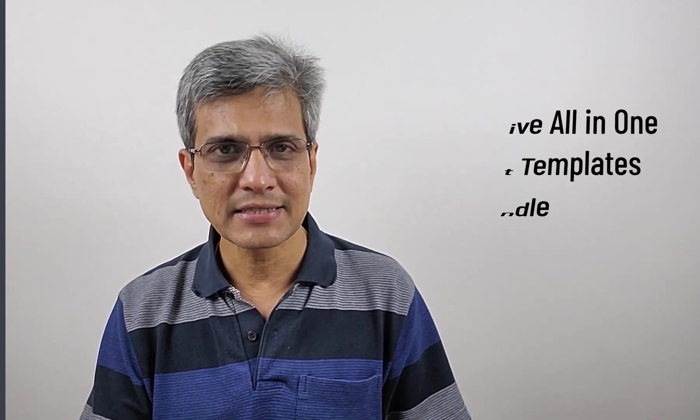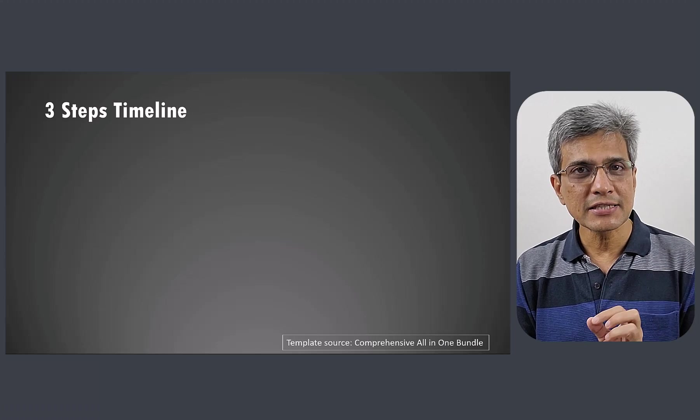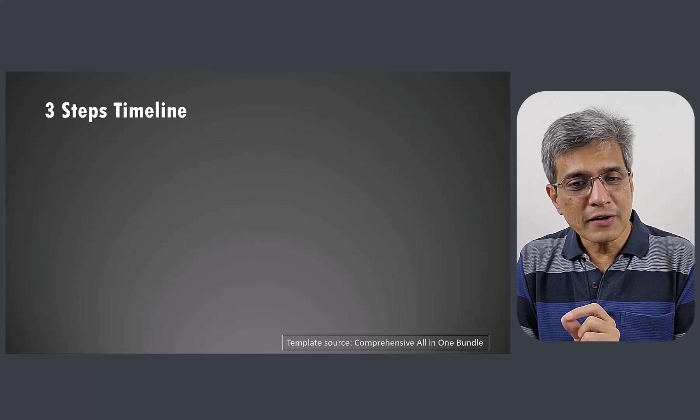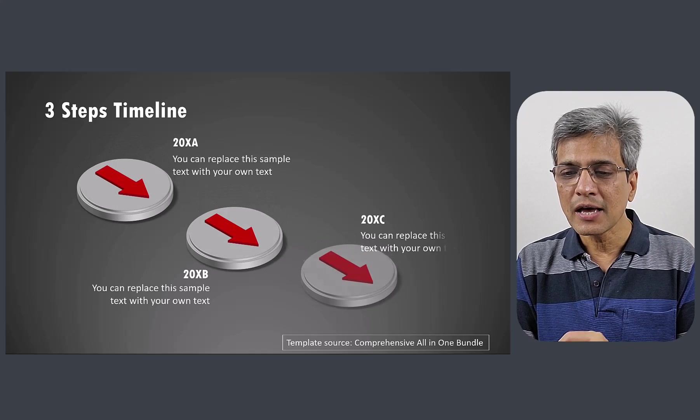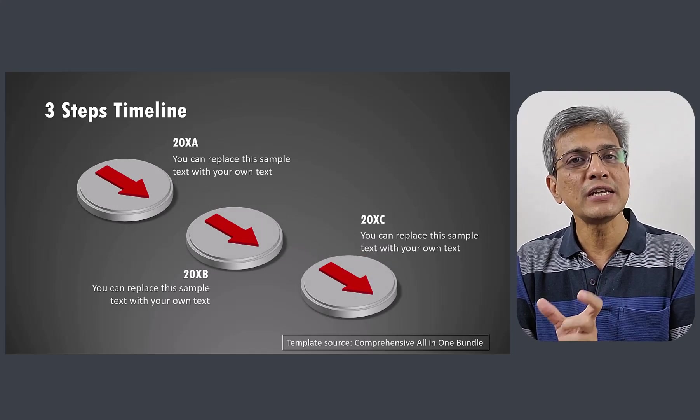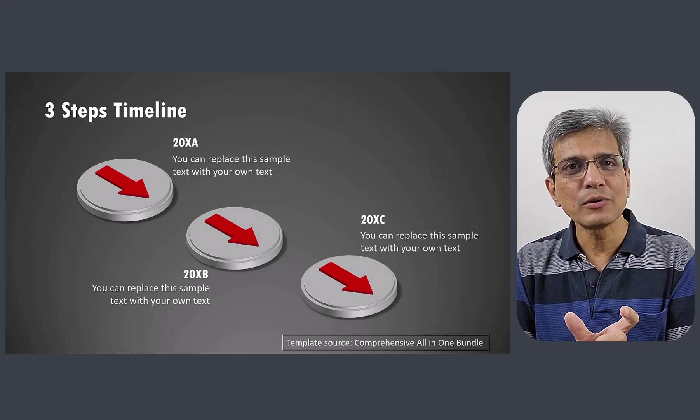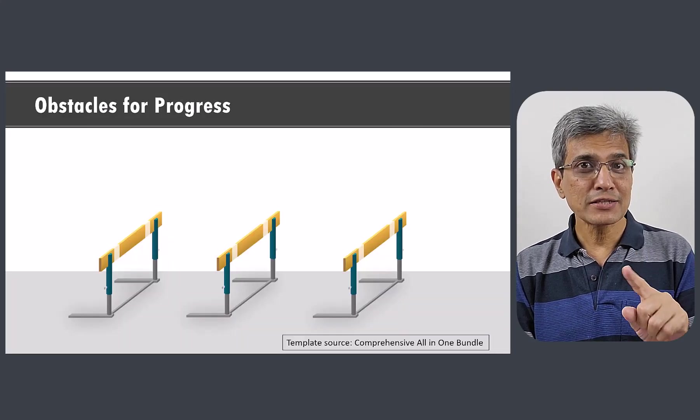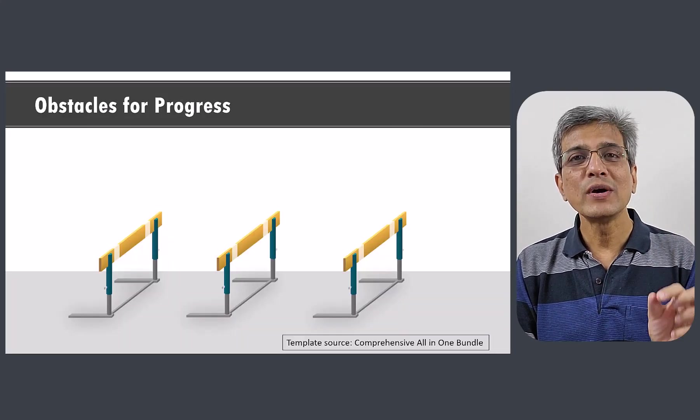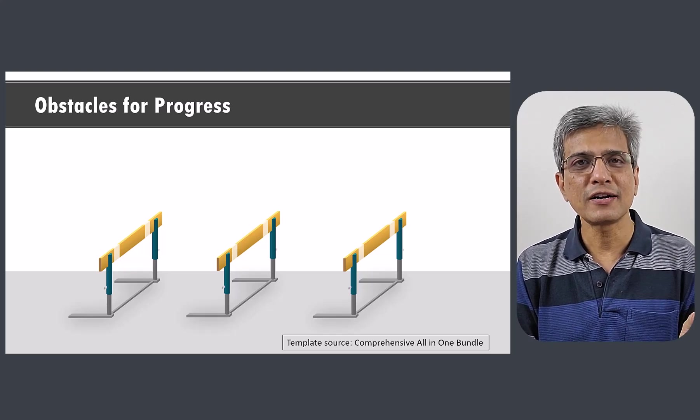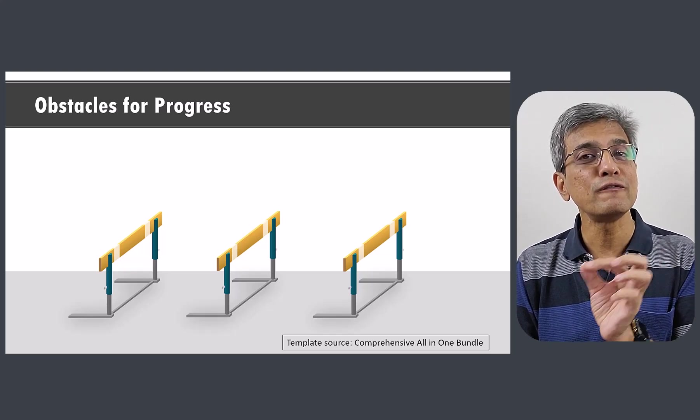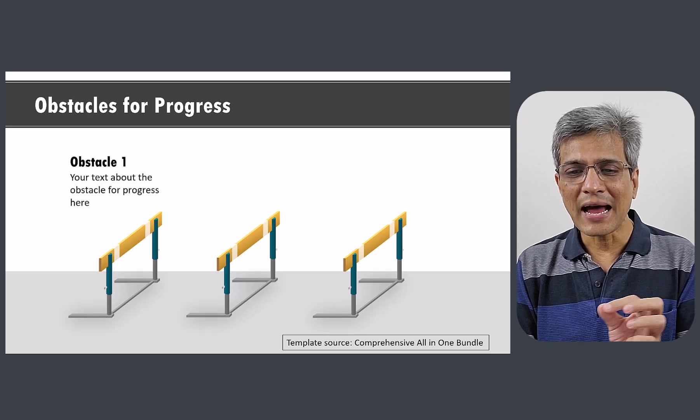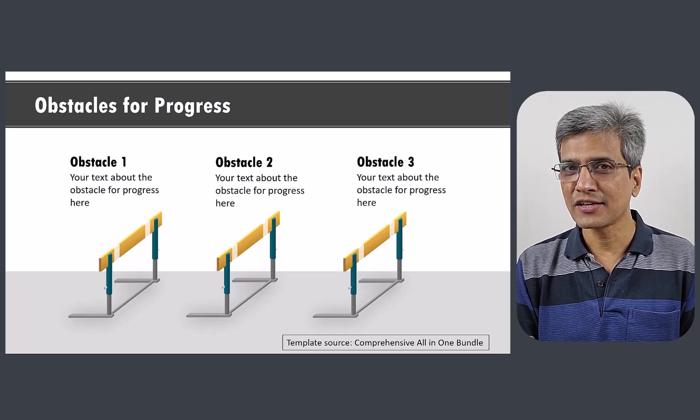Now, take a look at these examples. This is a three-steps timeline. Now, what we have done here is, we have replaced those three circles with these three beautiful 3D shapes. So, the diagram looks that much more professional. Now, look at this example. We have replaced those three hand-drawn circles with three pictures of hurdles. Now, we have a beautiful visual metaphor.